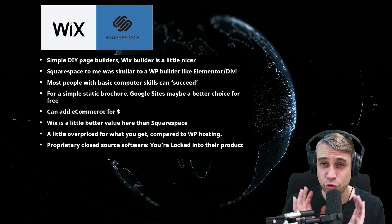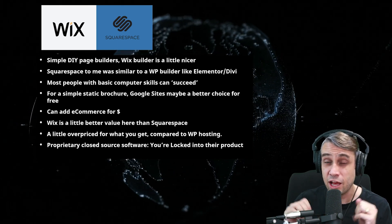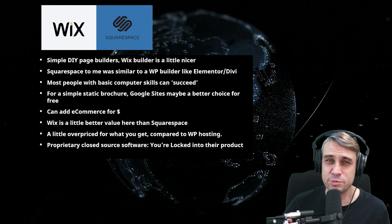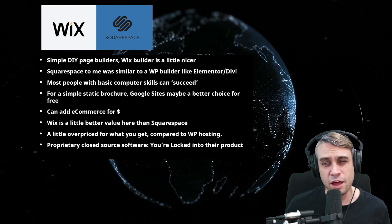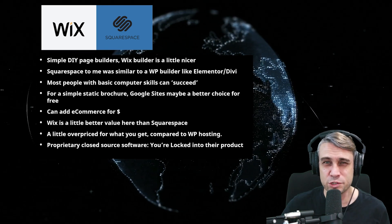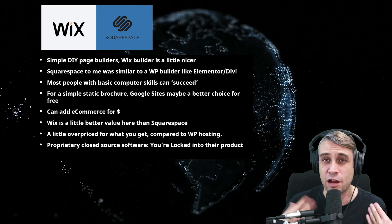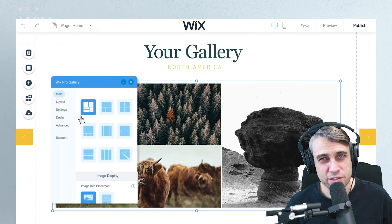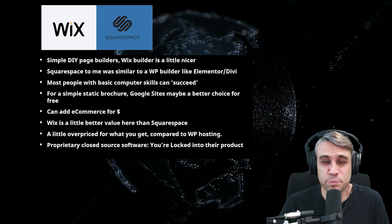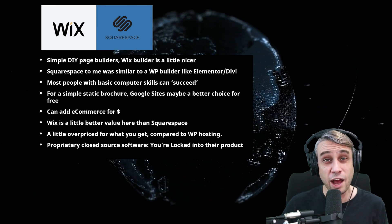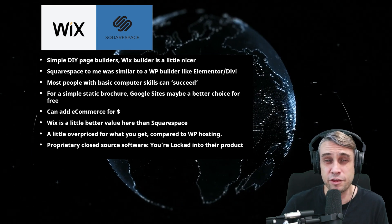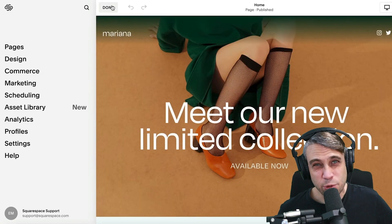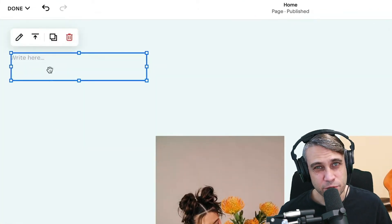Now let's look at Wix and Squarespace. I grouped these two together because they're quite similar products aiming at the same section of the market — simple DIY page builders for someone with a fairly low budget who wants a nice-looking website with a simple interface. I've tried the Wix builder a bit more than Squarespace's. The Wix one is a little bit friendlier, more like using graphic software. The Wix builder is definitely more drag-and-drop. Squarespace's page builder is pretty similar to most others — not notably nicer. The Squarespace editor is probably somewhere between Wix and Elementor.